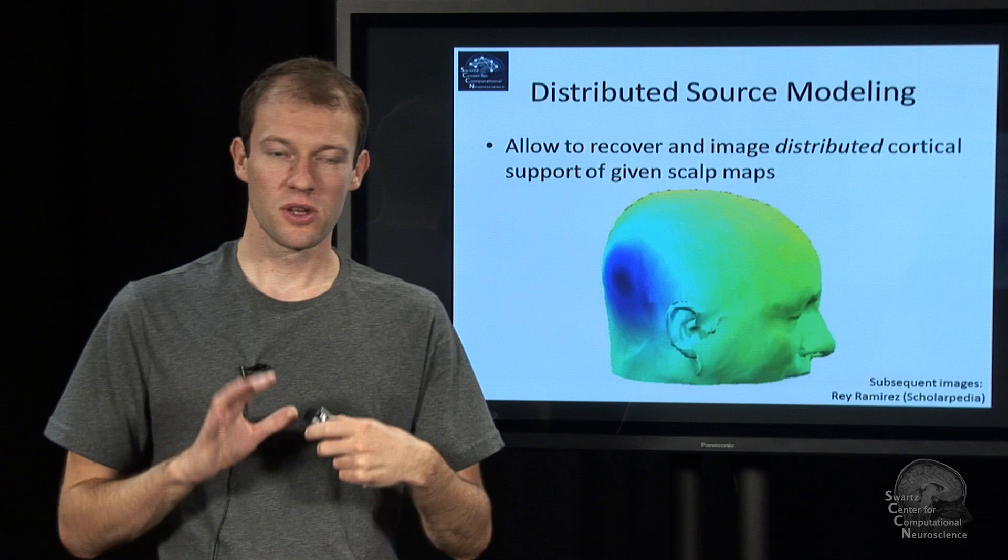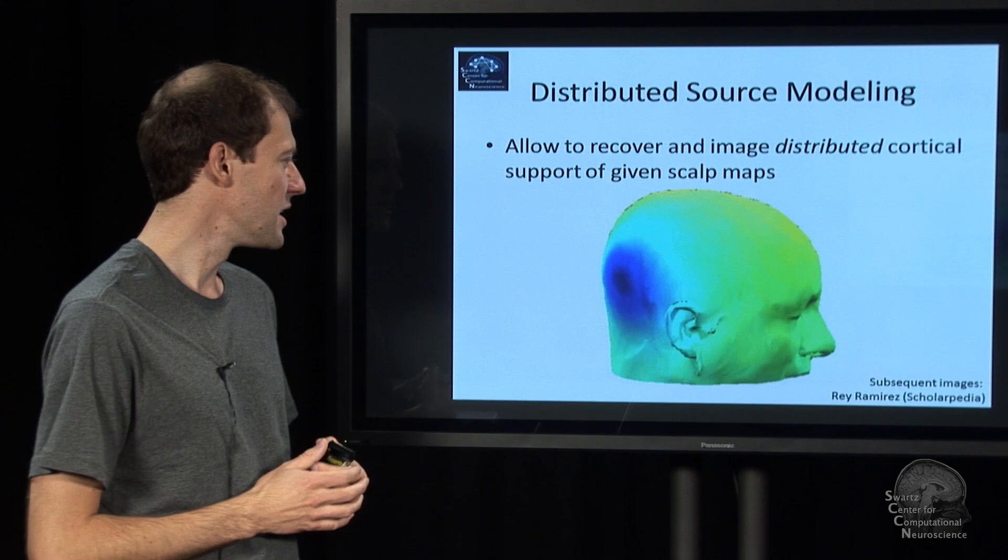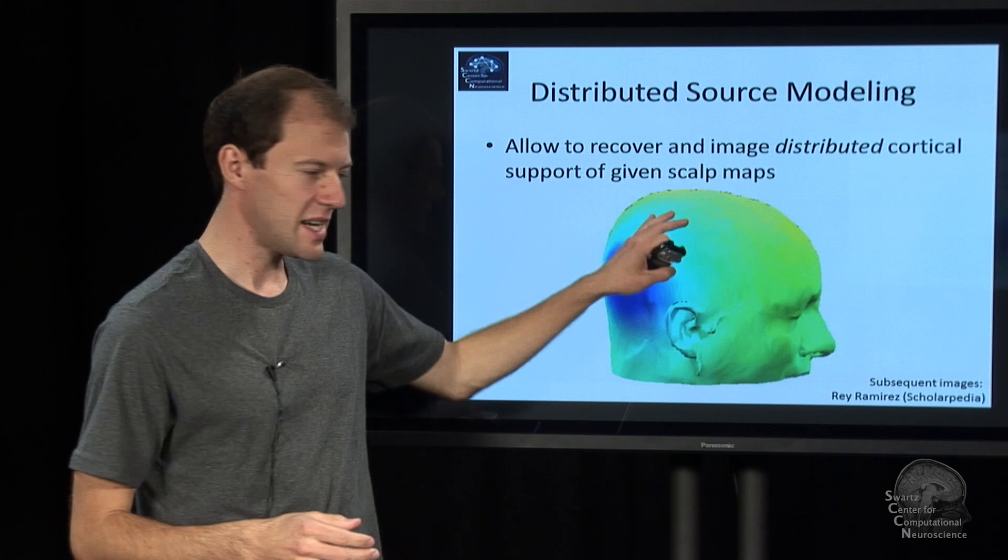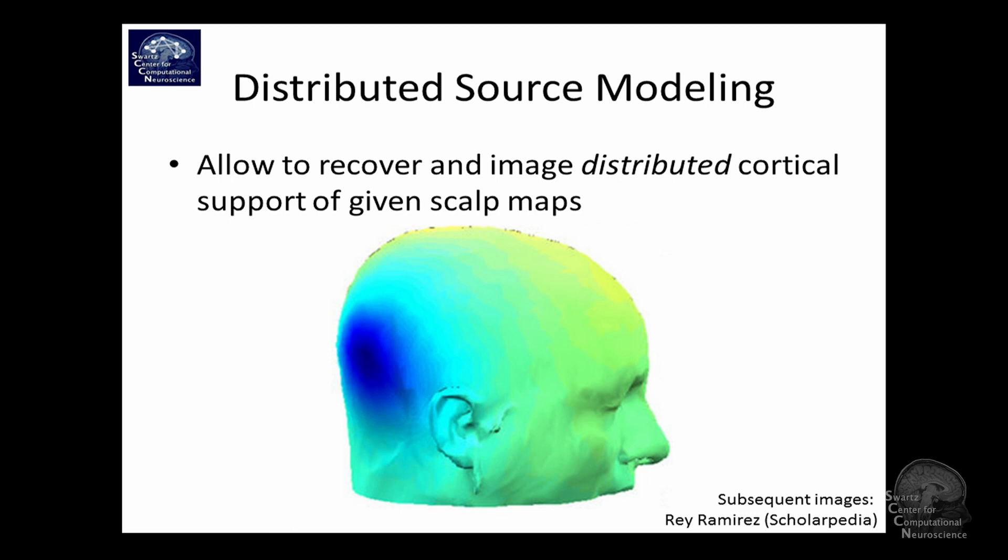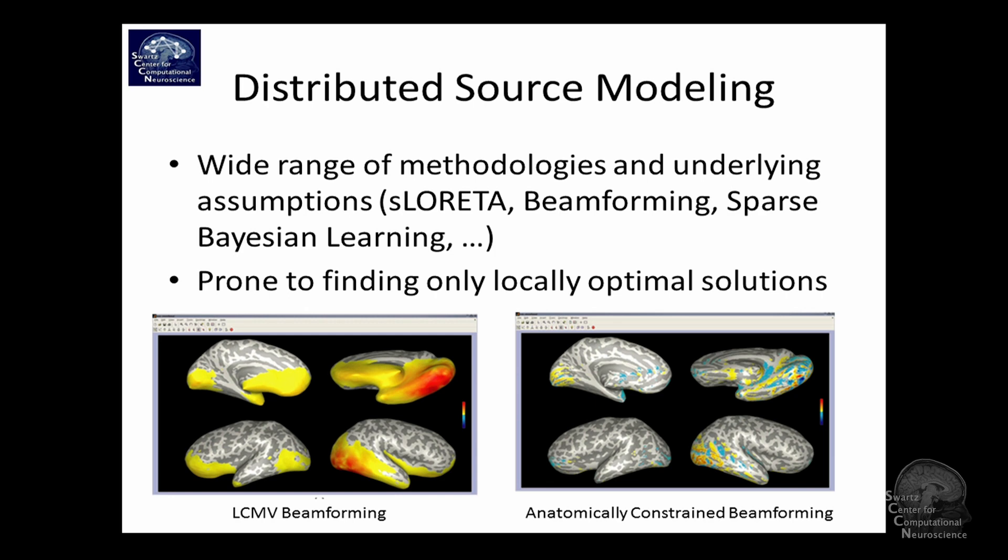So to get around that, there's other ways to fit the sources. One is distributed source modeling. So you can say, well, there's not a dipole that generated this. You can say, well, maybe there's a constellation of patches on the cortex that generated this and we want to know what the constellation is. And there's lots of different techniques with different trade-offs, different assumptions and so on. I just briefly show these pictures. Here's a linearly constrained minimum variance beamformer. It gives you some smooth blob down here. It's actually way too large, I think, to be biologically meaningful.